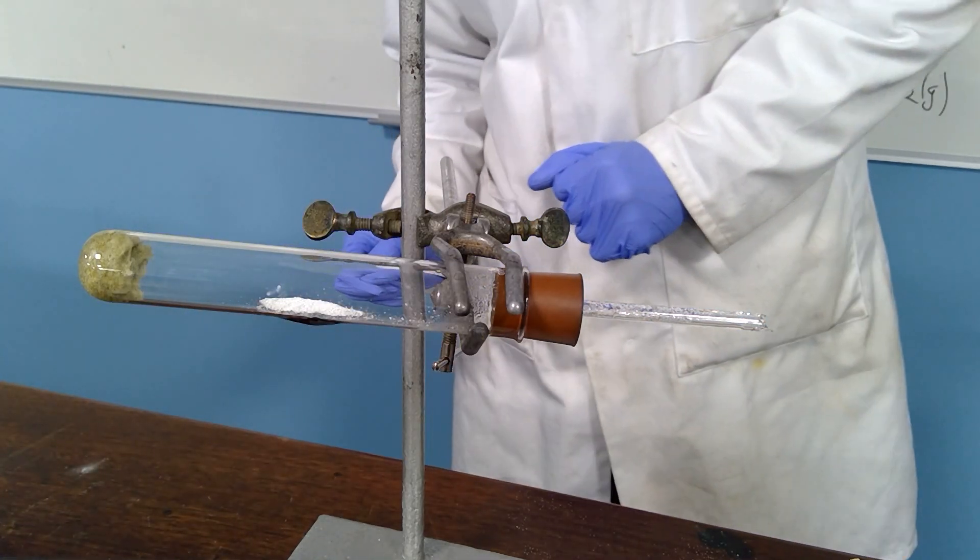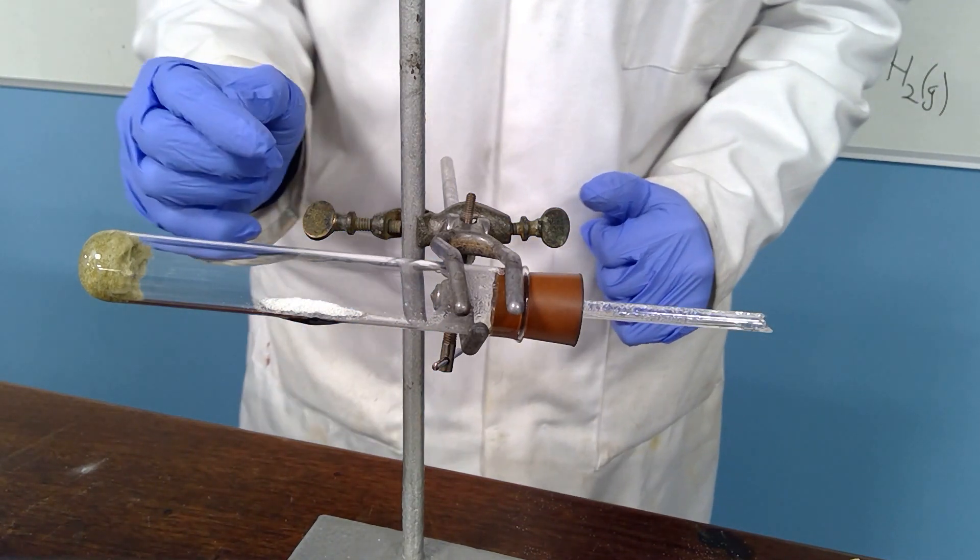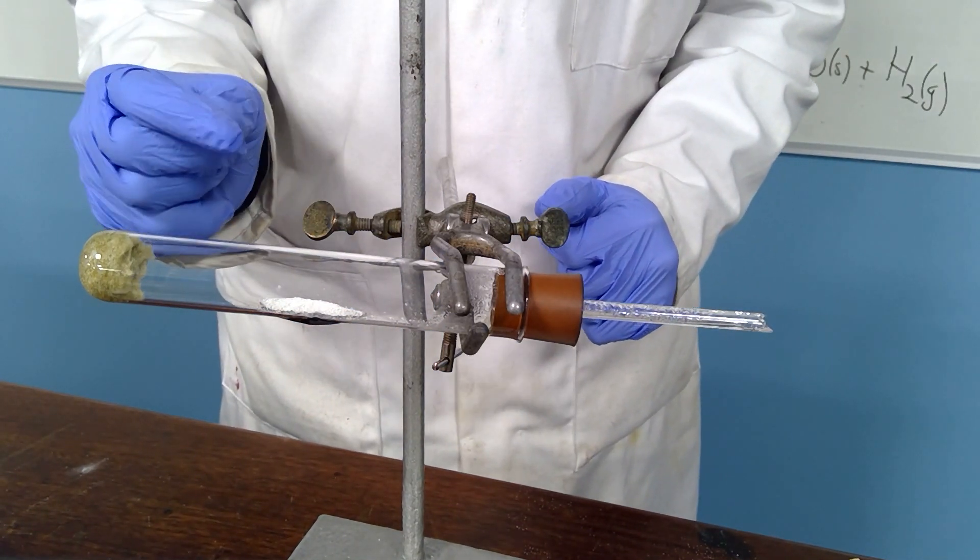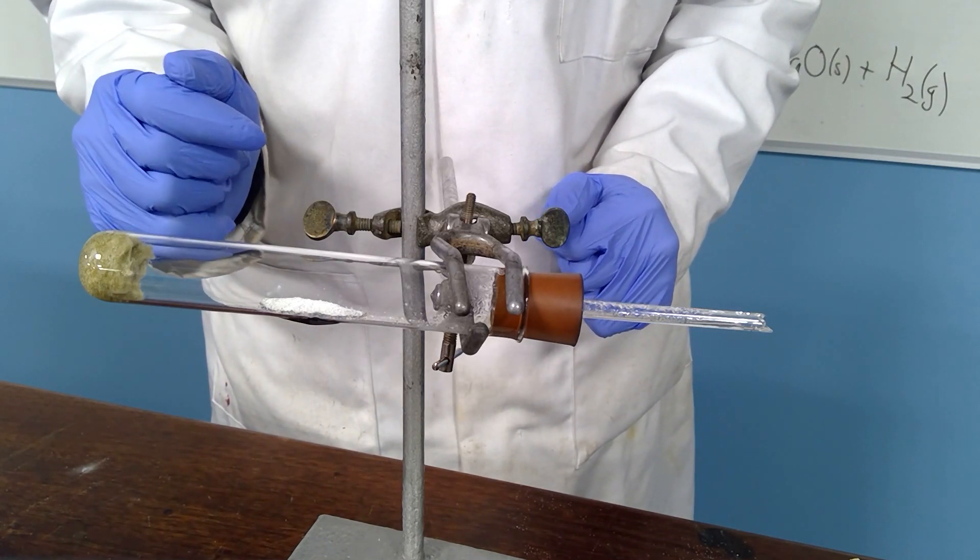You will see that the boiling tube may have slightly changed shape where the very hot magnesium has reacted and has slightly melted the tube.